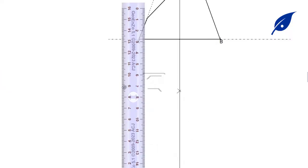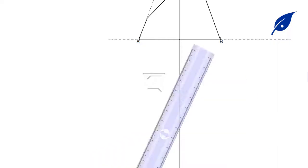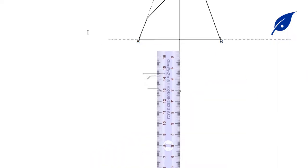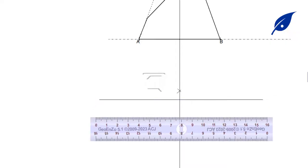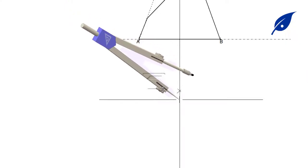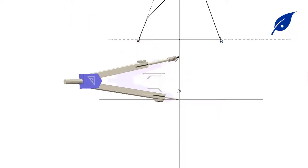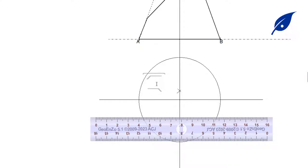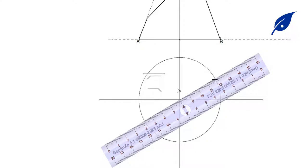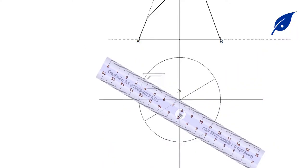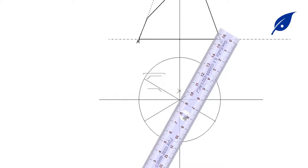Now we've drawn the front elevation. The next part is to draw the plan. We draw a horizontal line, then take the radius of the base, which is 38 millimeters, and draw the circle. The next thing is to divide this circle into 12 equal parts using our set square, then label each part.